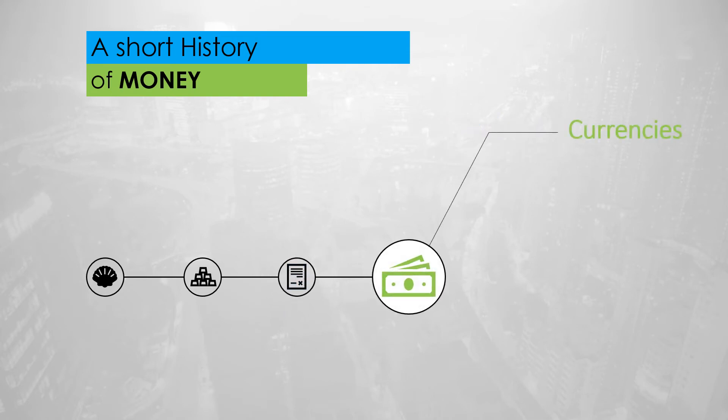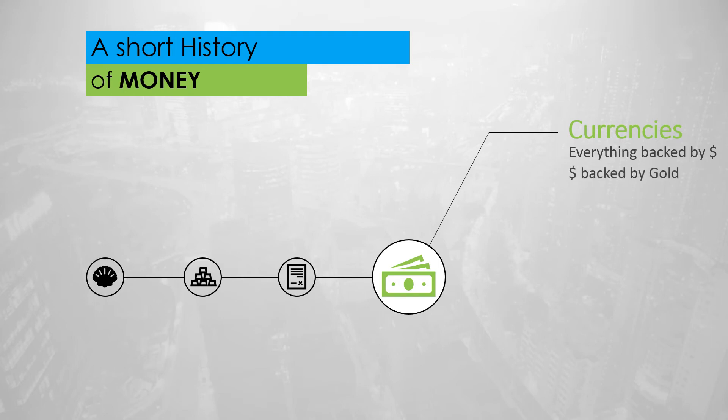National currencies were the next major step, solving the division issue while still being backed by gold. With World War II getting close to an end, the elite nations created a new monetary system. All currencies were backed by the US dollar, making it the world's reserve currency. Why the US dollar? Simple answer: because the US owned three quarters of the world's supply of gold, which was the standard until that day.